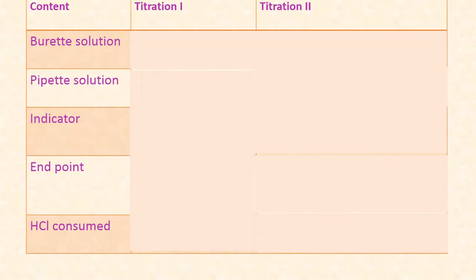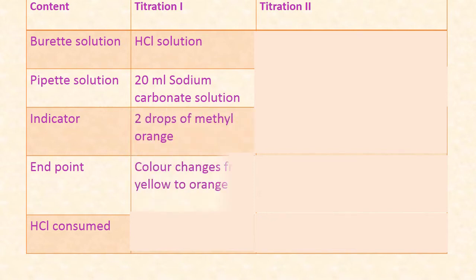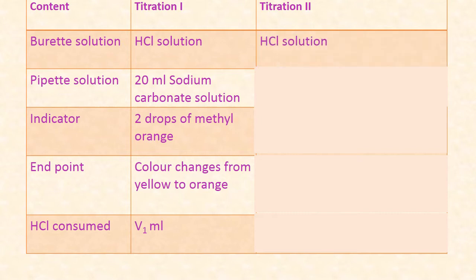Let us see the simple procedure of the experiment. Titration one: buret solution is HCl solution; pipette solution is 20 ml of sodium carbonate solution, which is a standard solution; indicator is two drops of methyl orange; endpoint is color change from yellow to orange. Let the HCl consumed be V1 ml. Titration two: buret solution is the same HCl solution; pipette solution is 20 ml of sample hard water.